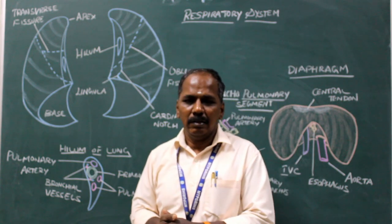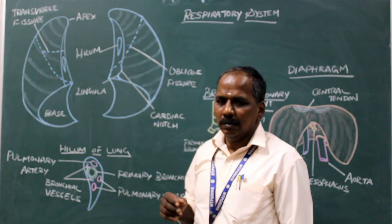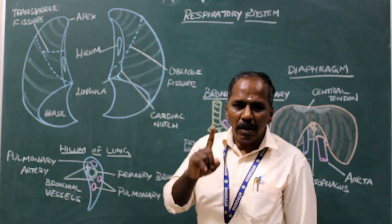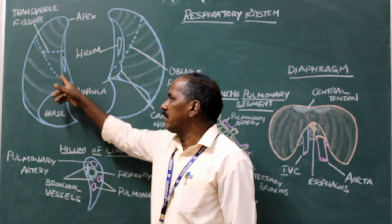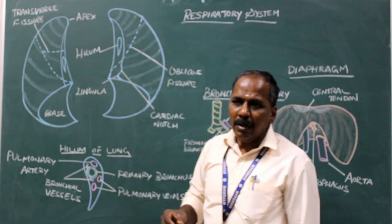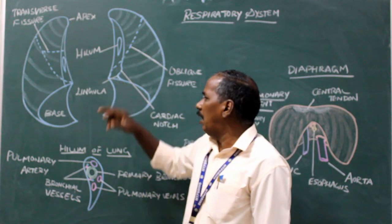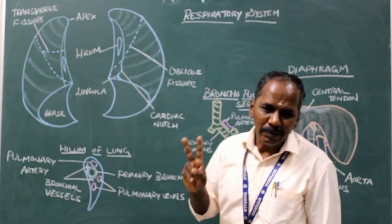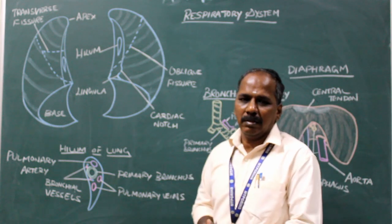Differences between the right and left lung: The right lung is short and wider; the left lung is long and narrower. The right lung has two fissures and three lobes; the left lung has one fissure and two lobes. The cardiac notch is present in the left lung and absent in the right lung. The cardiac fossa is deep in the left lung and shallow in the right lung. Lingula is present in the left lung and absent in the right lung. The right lung has two primary bronchi; the left lung has one primary bronchus.